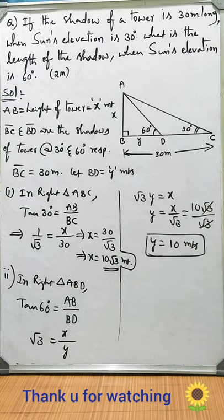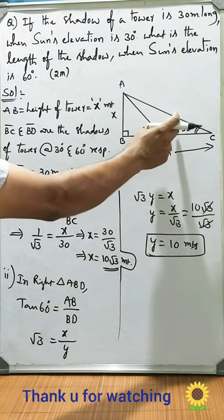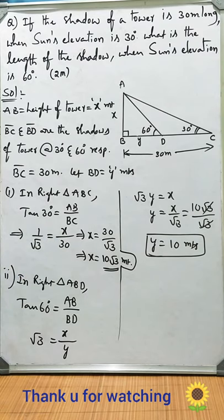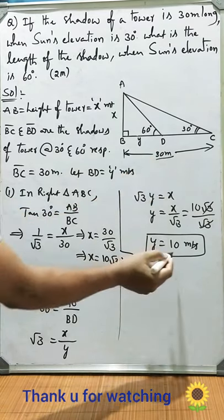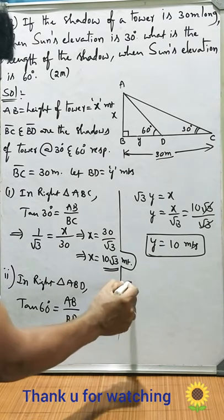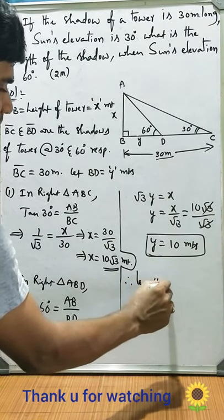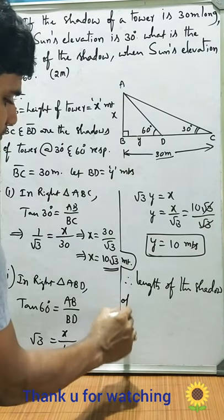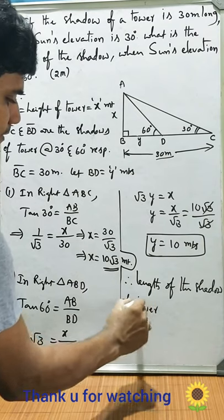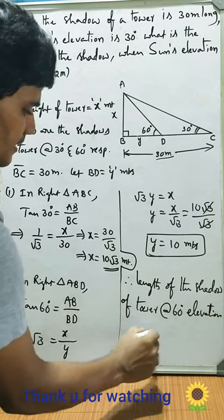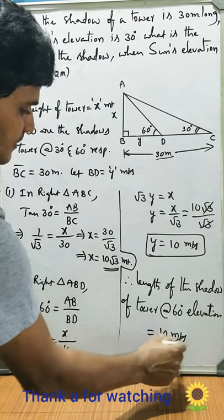When the sun's elevation changes from 30 to 60, the shadow decreases from 30 to 10. So this is the required quantity. Length of the shadow of tower at 60 degrees elevation is equal to 10 meters.